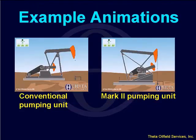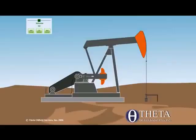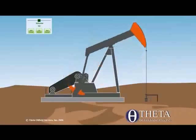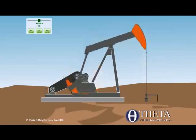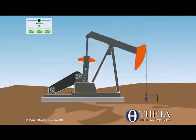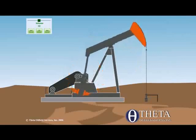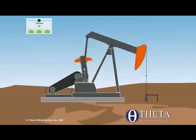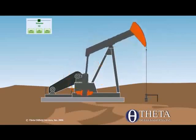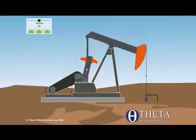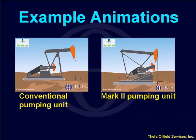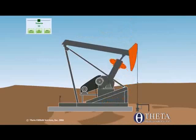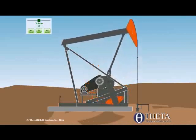Let me demonstrate. We have surface and downhole animations. This is a conventional unit on the surface. I can maximize the screen size and I don't lose any resolution. I can zoom in and look at some part of it — zoom in even more, move it around while zoomed and see different parts of it, all without losing any resolution. Here's the Mark II — it's a lot smoother, a lot more realistic.